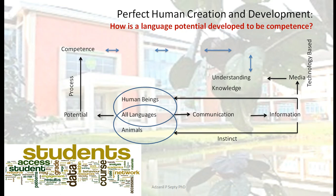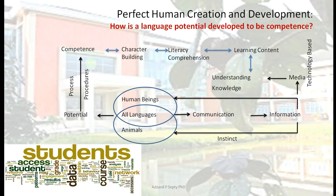In the technology era, we need technology-based media to better understand the information. The potential we have becomes competent through a process in the set of learning — the process to build character, the process to build understanding. And the potential to become competent also goes through procedures on the side of teaching. So that's what teachers are doing in the teaching and learning process. That's the most important thing to keep in mind. Enjoy and keep studying. Thank you.